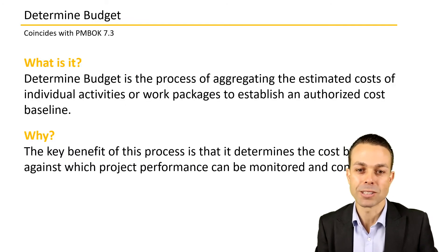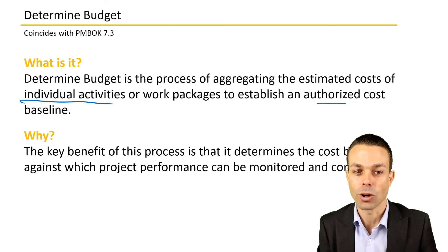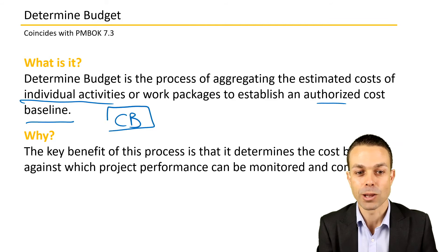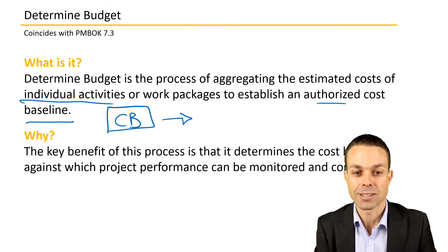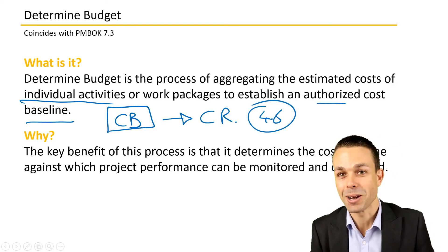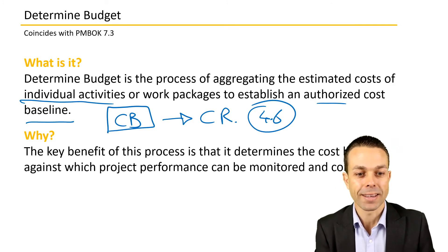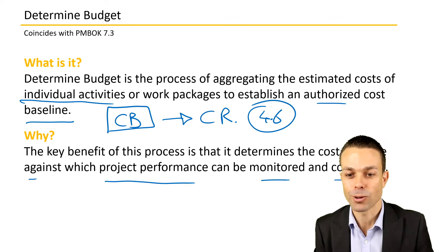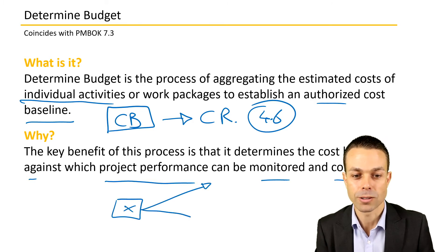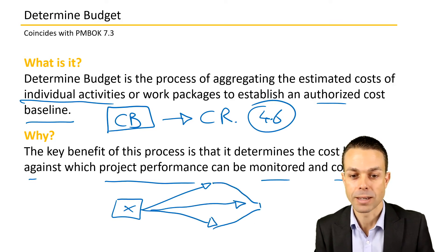Determining the budget is the process of aggregating the estimated costs of individual activities or work packages to establish an authorized cost baseline. This is where we're actually creating that cost baseline, and it's going to be locked in place at a certain point in time. If we need to change it in the future, we need to go through a change request via perform integrated change control. We do this because it determines the cost baseline against which project performance can be monitored and controlled.